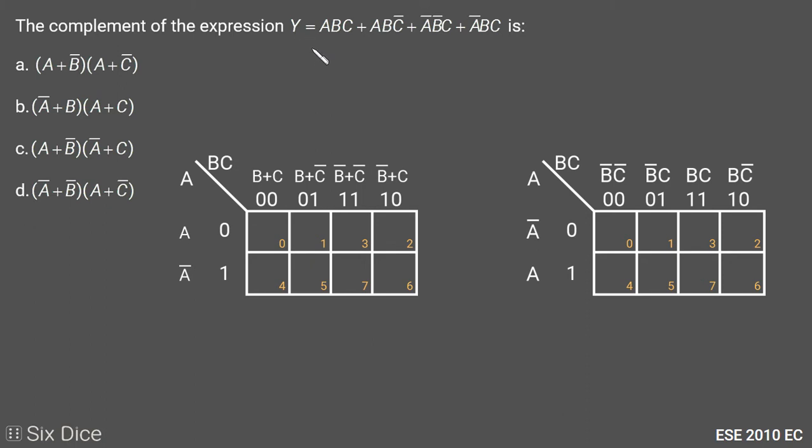In the given expression, the first term is ABC which is the 7th cell, so we put 1 at the 7th cell. Then we have ABC̄, which is the 6th cell, so we put 1 at the 6th cell. Then we have ĀB̄C, so we put 1 at the 1st cell.